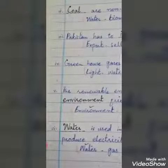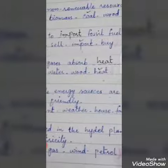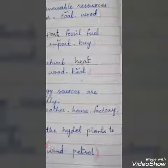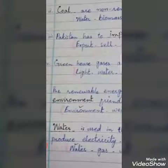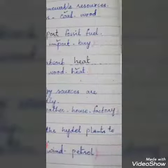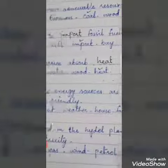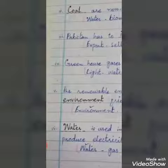Number 5: The renewable energy sources are dash friendly. Options: environment, weather, house, factory. The correct option is environment.